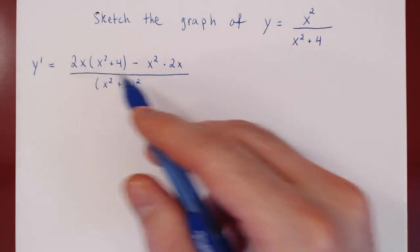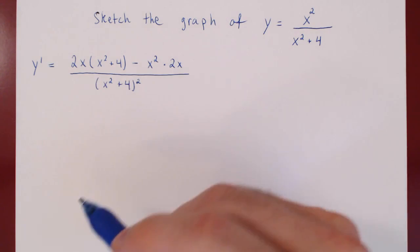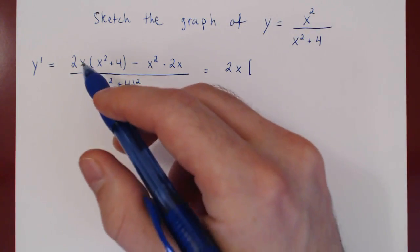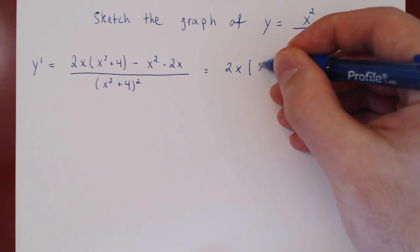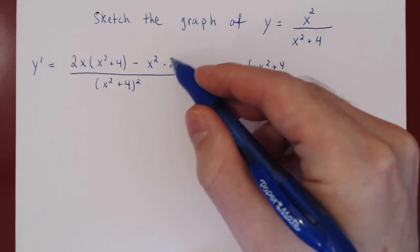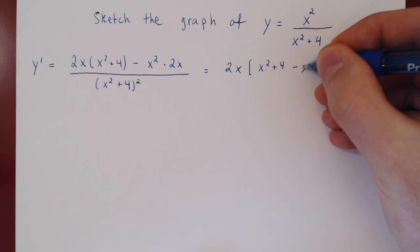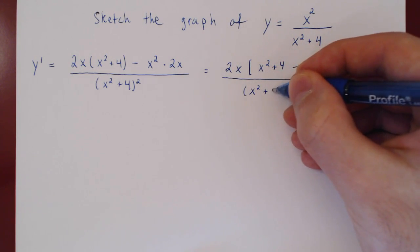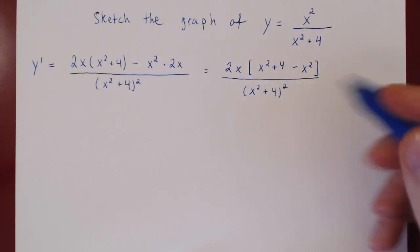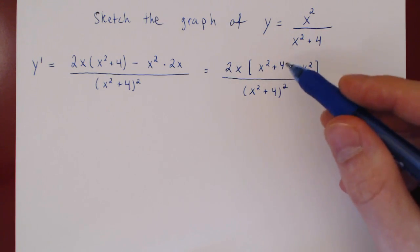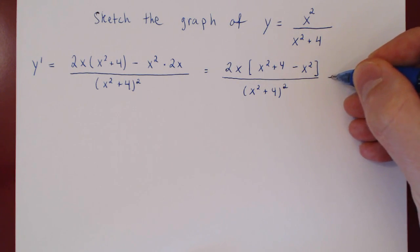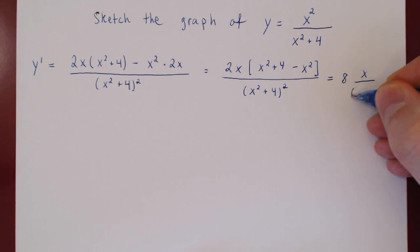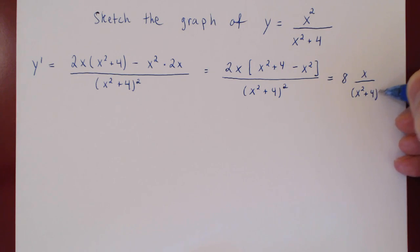As always, we're going to try and simplify, so we factor common terms. There is a 2x in both of these terms — it's a common factor. So we'll get a 2x. If we factor 2x, we're left with x squared plus 4, minus x squared, over x squared plus 4, all squared.